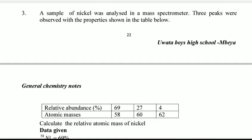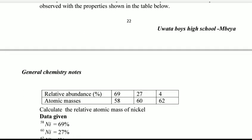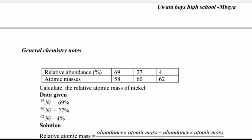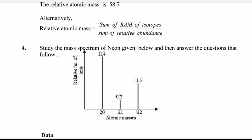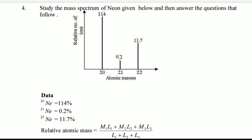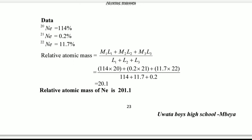A sample of nickel was analyzed in a mass spectrometer. Three peaks were observed with relative abundances and atomic masses. That is also simple. Study the data given and answer the questions that follow.